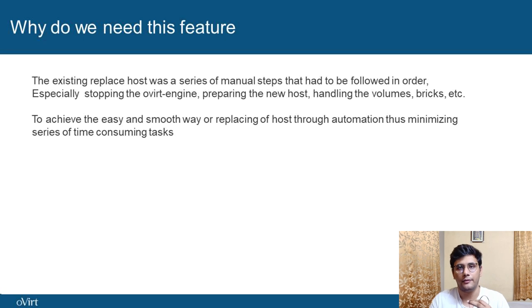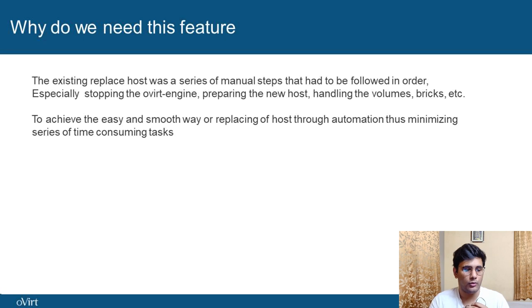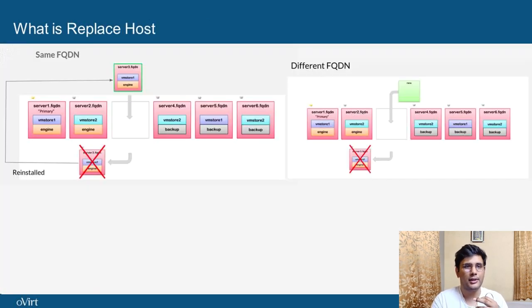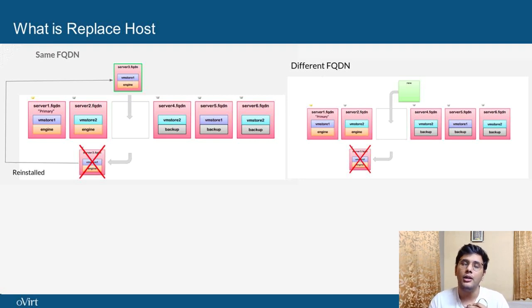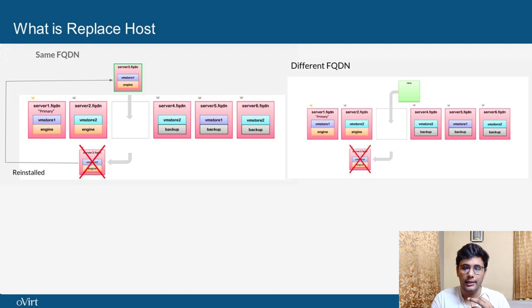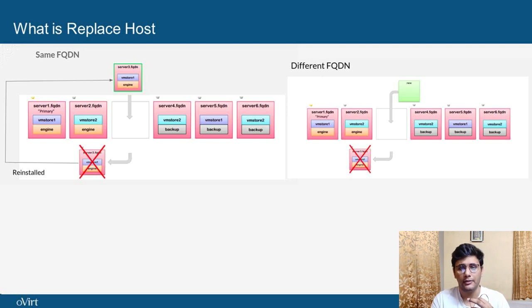Also, with the minimum number of interventions. So what is replace host? It's pretty self-explanatory, but what I really intend to speak about here is the two types of replacements: same node FQDN and different node FQDN. Same node FQDN means you are replacing a physical node by cleaning it up and adding the same node back to the cluster. Different node means you are replacing a physical machine with another one.